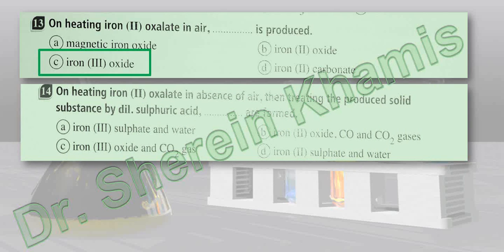Question number 14: on heating iron(II) oxalate in the absence of air, then treating the produced solid substance with dilute sulfuric acid, what will be formed? We have iron oxalate heated in the absence of air; the solid is then added to dilute sulfuric acid, and it will produce iron(II) sulfate and water.